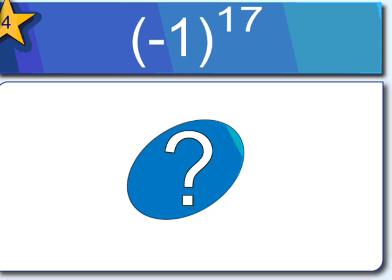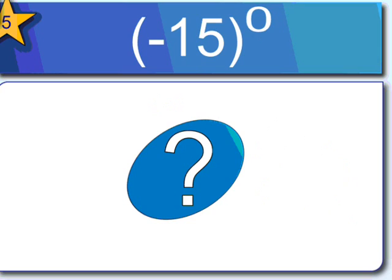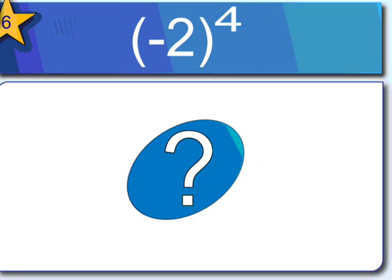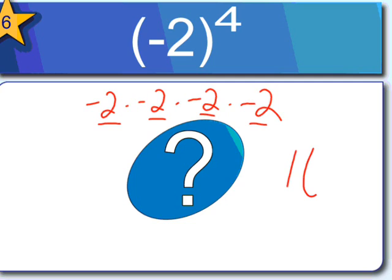Negative 1 to the 17th power — I know the answer is going to be 1, but is it positive or negative? Because the exponent is an odd number, the result is going to be negative 1. Negative 15 to the zero power — anything to the zero power is just 1. Negative 2 to the 4th power is negative 2 times negative 2 times negative 2 times negative 2. That's 2×2=4, ×2=8, ×2=16. Because the exponent is even, the result is positive 16.